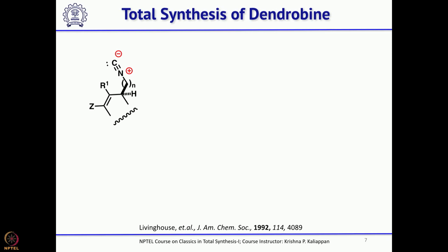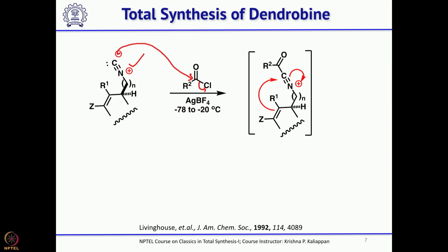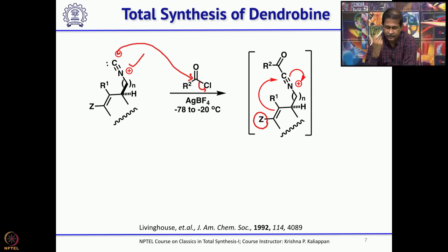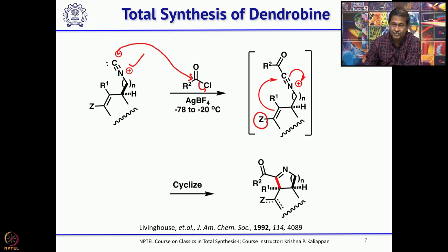The key reaction is the cyclocondensation. The C-minus of the isocyanide attacks the carbonyl of the acid chloride, giving an acylinium ion - similar to an iminium ion but with a triple bond. If a double bond is at an appropriate place, it can neutralize the positive charge on the nitrogen. If Z is oxygen, this is like a higher-order Mannich reaction - in the Mannich reaction you have an enol and iminium ion; here you have a triple bond. It can then cyclize to give the corresponding imine.